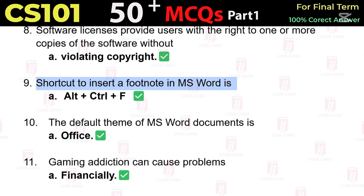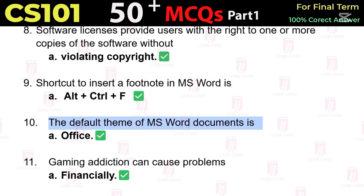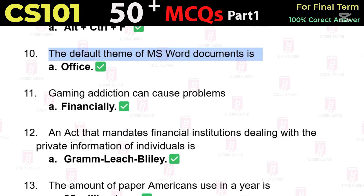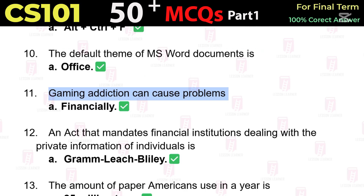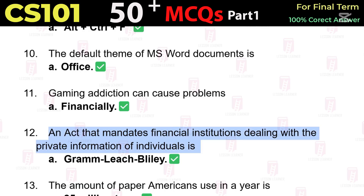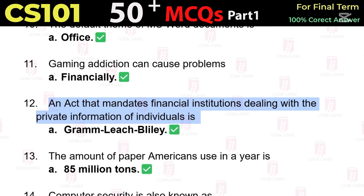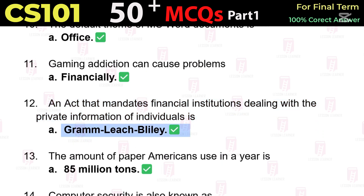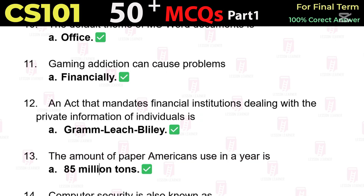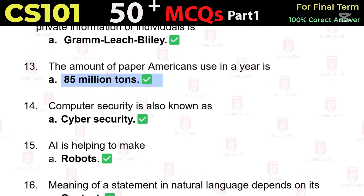Software licenses provide users with the right to one or more copies of the software without violating copyright. The shortcut to insert a footnote in MS Word is ALT+CTRL+F. The default theme of an MS Word document is Office. Gaming addiction can cause financial problems. An act that mandates financial institutions dealing with private information of individuals is Gramm-Leach-Bliley. The amount of paper Americans use in a year is 85 million tons.